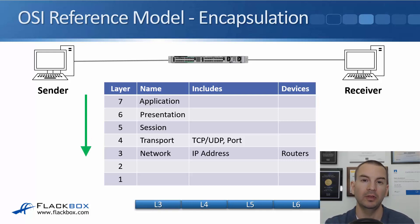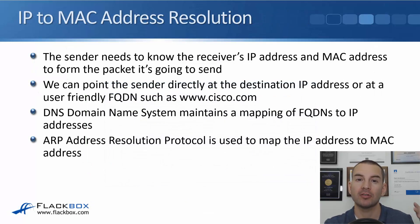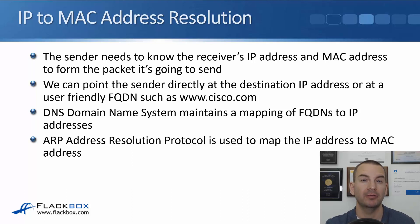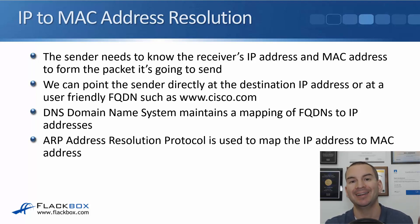That will then get encapsulated with the layer 3 IP header, which includes the source and destination IP address. That will then be encapsulated in the layer 2 data link header, which includes the source and destination MAC address, and that will then get put onto the physical wire. As you saw in the last lecture, the sender can either send directly to an IP address or to an FQDN. If it sends to that fully qualified domain name, that will need to be resolved into the IP address using DNS. So we'll find the destination IP address, and when the packet gets down to layer 2, the sender also needs to know the destination MAC address.